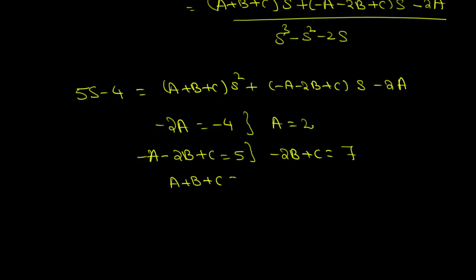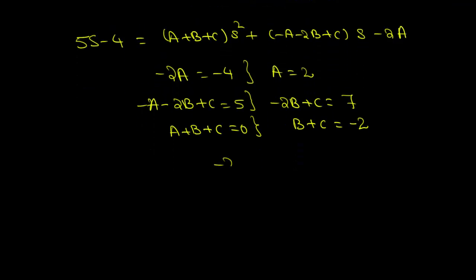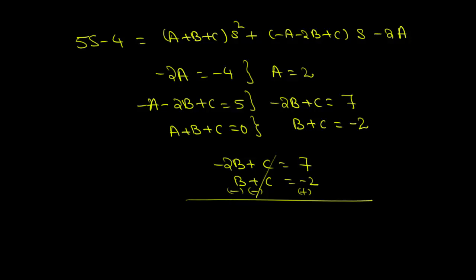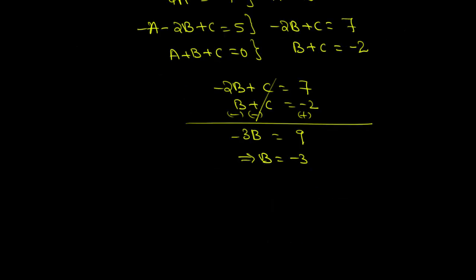The coefficient of s squared gives A plus B plus C equals 0, so B plus C equals minus 2. We now have two equations: minus 2B plus C equals 7, and B plus C equals minus 2. Subtracting the second from the first, we get minus 3B equals 9, so B equals minus 3. Substituting B equals minus 3 into B plus C equals minus 2 gives minus 3 plus C equals minus 2, so C equals 1.